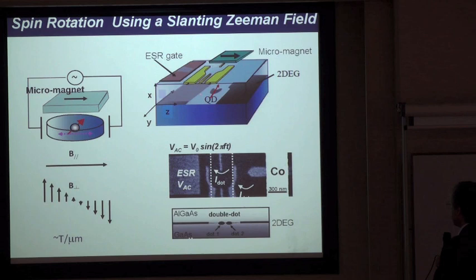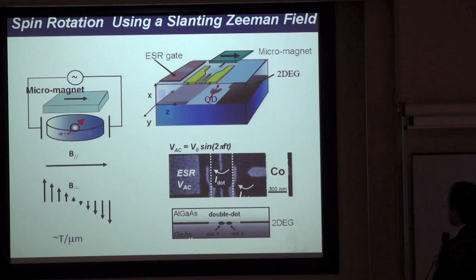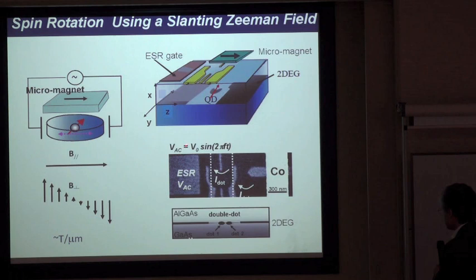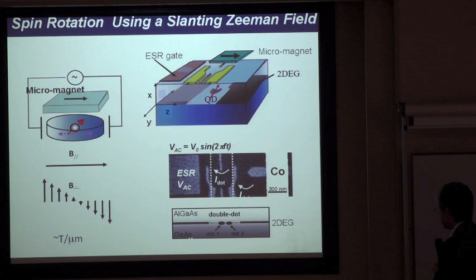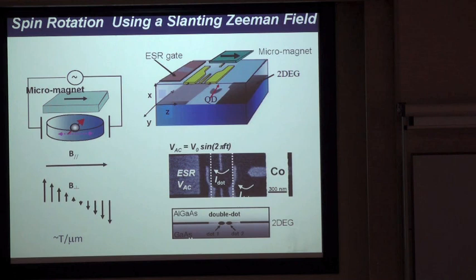Here is our device scheme. We define the quantum dot in a two-dimensional electron gas using Schottky gates shown in yellow. On top, we place a cobalt micro-magnet, which is magnetized in-plane by application of an external magnetic field. We also place a gate to which we apply the microwave. The cobalt is usually placed on top of the quantum dot, intentionally displaced here for clarity. By adjusting the gates, we make a double quantum dot in the plane of the two-dimensional electron gas.